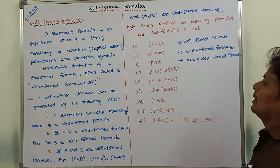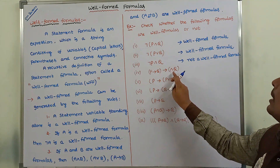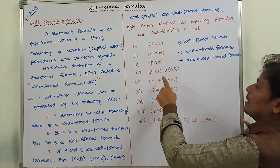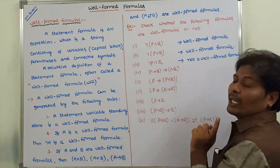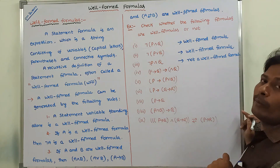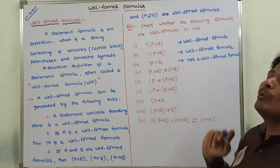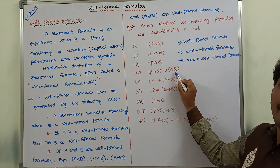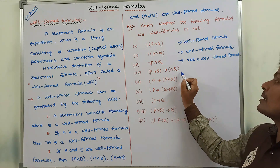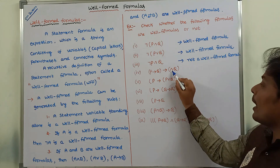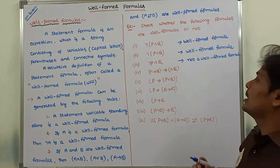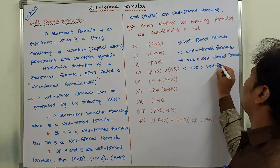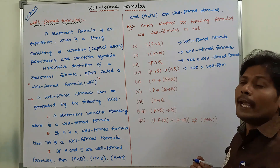Consider the fourth example: P conditional Q, and then 'and Q'. Here P and Q are two statement variables, conditional is a connective, and up to (P conditional Q) with parentheses it is a well-formed formula. But 'and Q' is not a well-formed formula. If instead it were negation Q, that would be a well-formed formula — because negation Q is a valid well-formed formula. Because of 'and Q' not being a well-formed formula, the entire expression is not a well-formed formula.